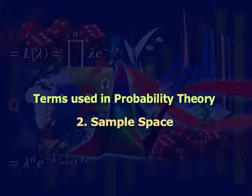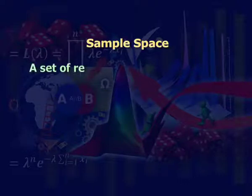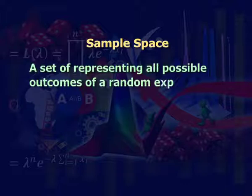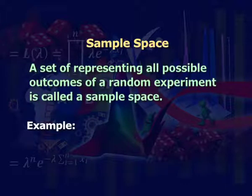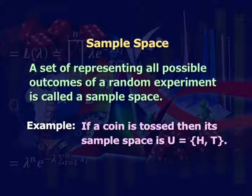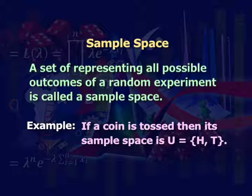Second: sample space. A set representing all possible outcomes of a random experiment is called a sample space. For example, if a coin is tossed, then its sample space is S equal to {head, tail}. We denote head by H and tail by T.